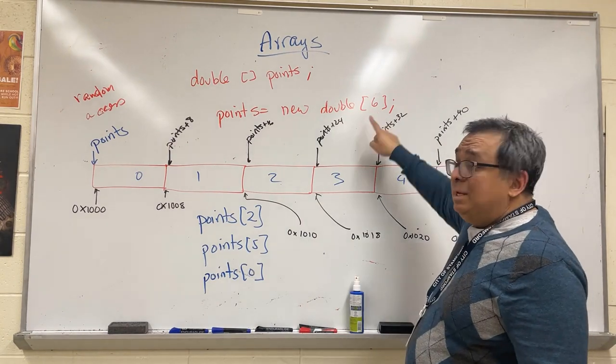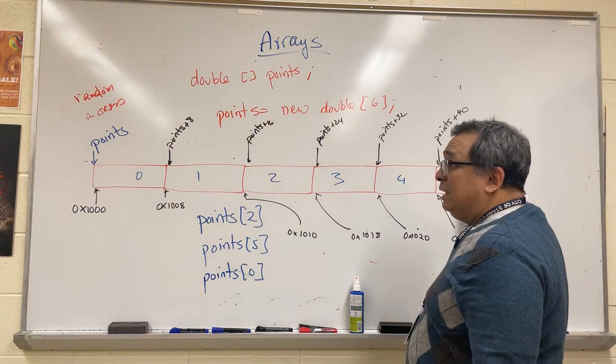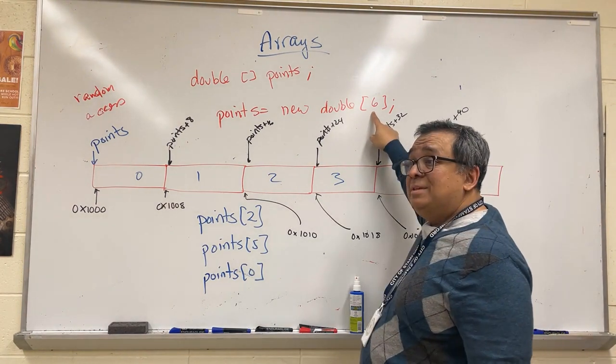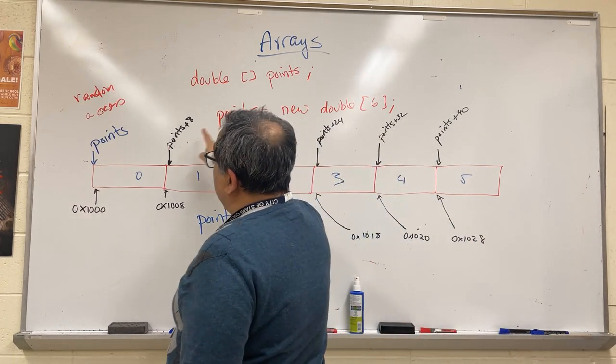that has six elements in it. The indexes go from zero to five. Notice that the index of the last element is always one less than the size of the array.